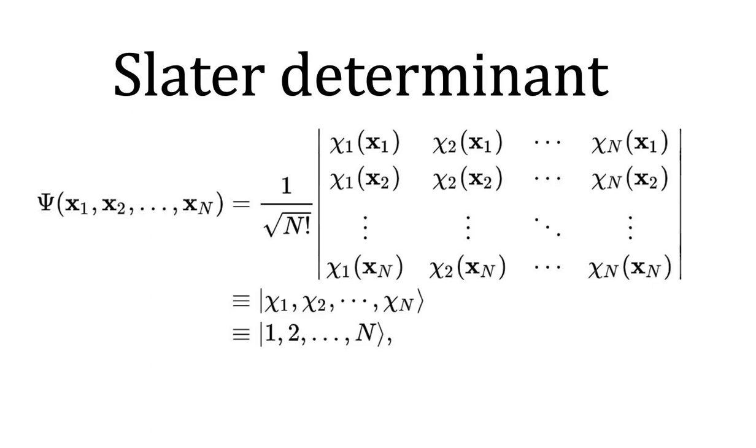Only a small subset of all possible fermionic wave functions can be written as a single Slater determinant, but those form an important and useful subset because of their simplicity.